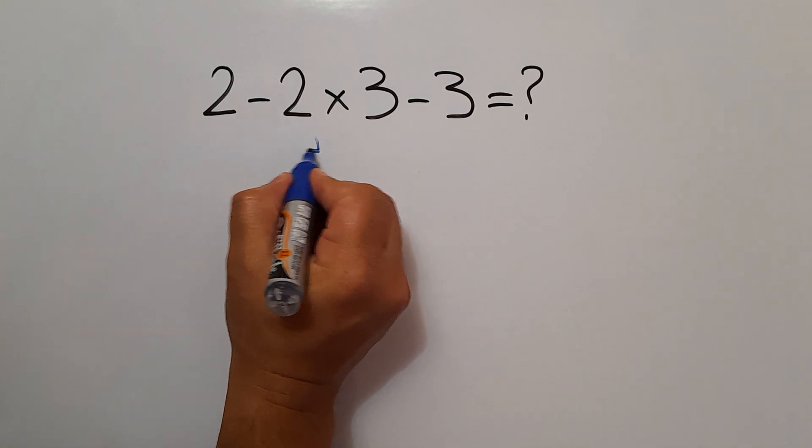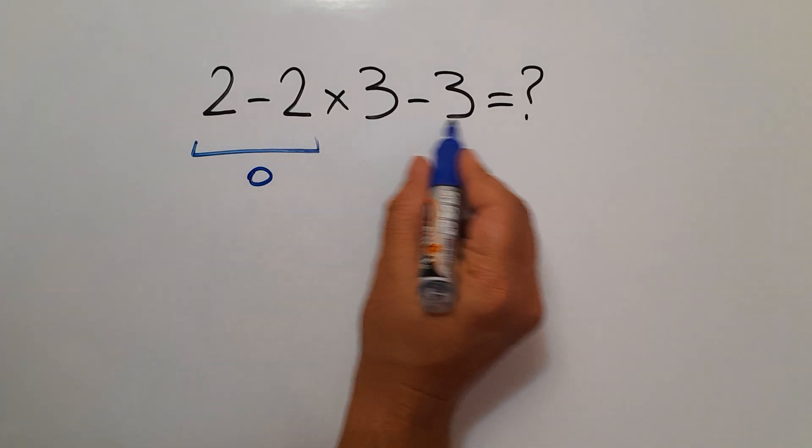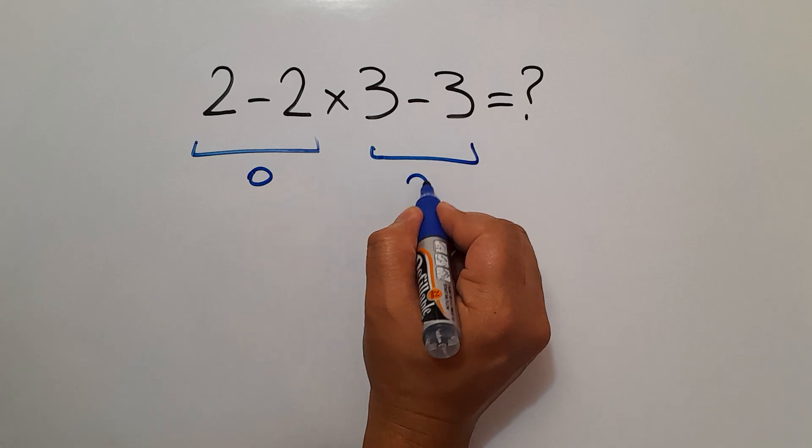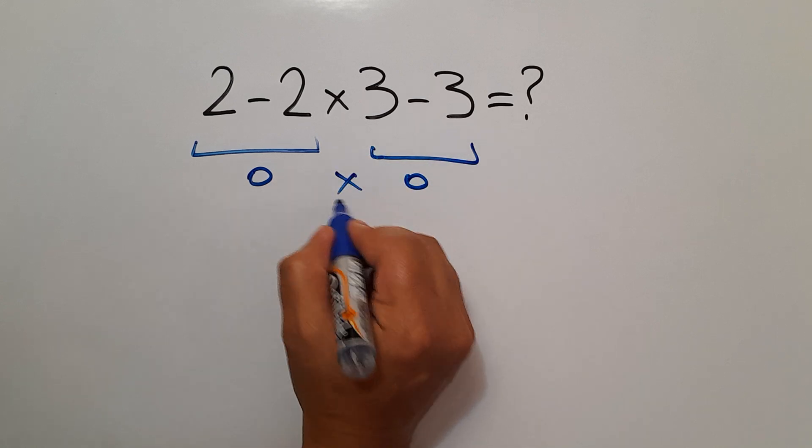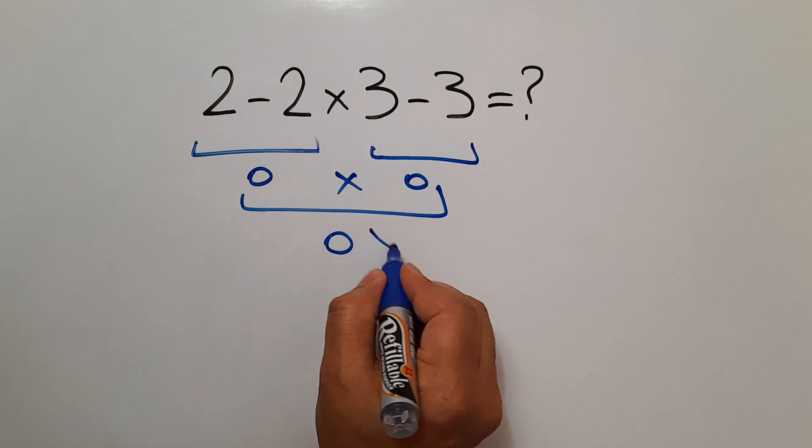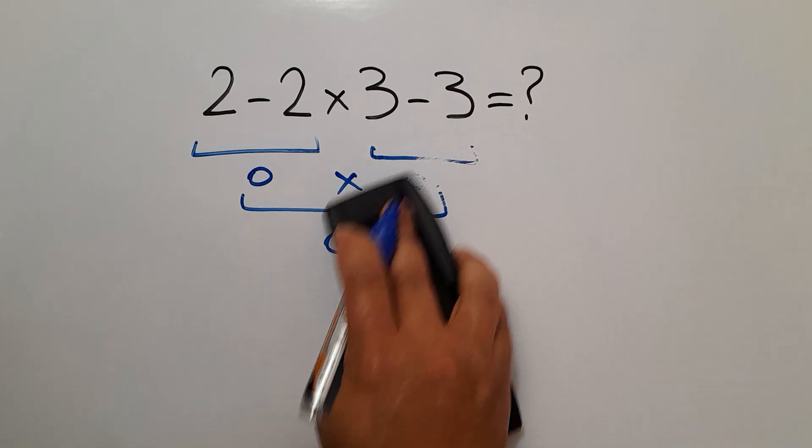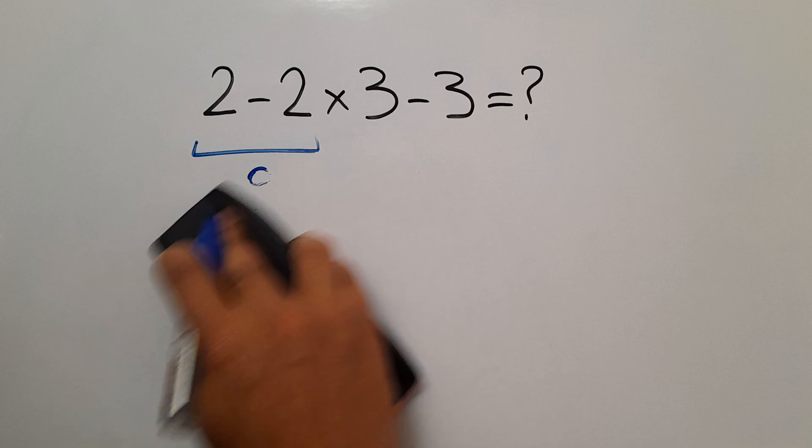2 minus 2 equals 0 and 3 minus 3 equals 0. 0 times 0 gives us 0, but this answer is not correct because according to the order of operations, which is PEMDAS...